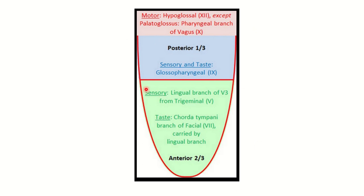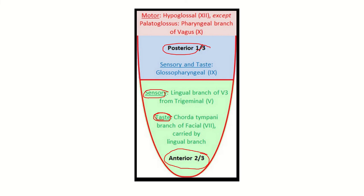In this diagram, this first portion is the anterior two-thirds of the tongue, and this is the posterior one-third of the tongue. For the anterior two-thirds, two terms are important: one is sensory and another is taste — both are sensory, but one is general sensation and the other is special sensation.